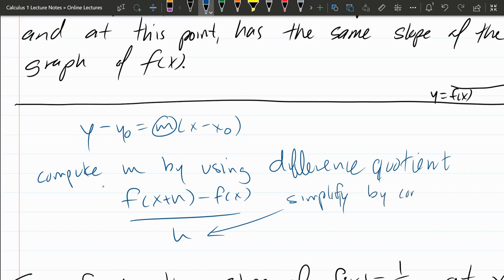Simplify by canceling the h in the denominator. Eventually, it will cancel out with some of the h, or maybe even all of the h's in the numerator.